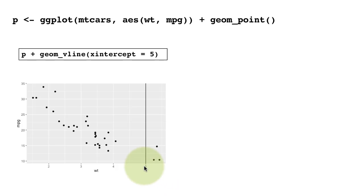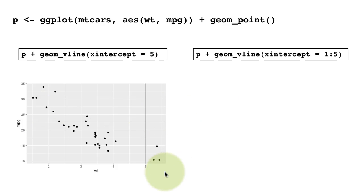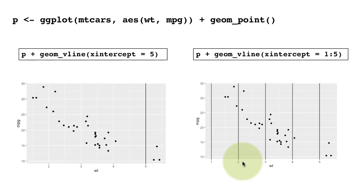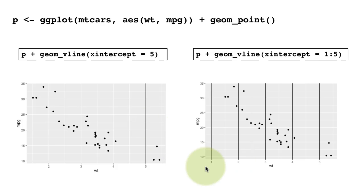Most likely we would draw vertical lines at significant positions like the mean or median of the weight, or draw a horizontal line with some significance. If you want multiple lines, instead of passing one value just pass a vector. For example, 1:5 gives the vector 1 2 3 4 5, producing five vertical lines. You can also control other aspects like color and line type.